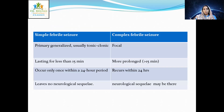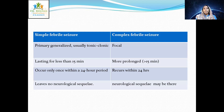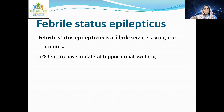Simple febrile seizure occurs in children aged 6 to 60 months with primary generalized seizures — usually tonic-clonic — lasting less than 15 minutes, occurring only once within a 24-hour period, and leaving no neurological sequelae. Complex febrile seizures may be focal, prolonged (more than 15 minutes), recur within 24 hours, and may leave neurological sequelae.